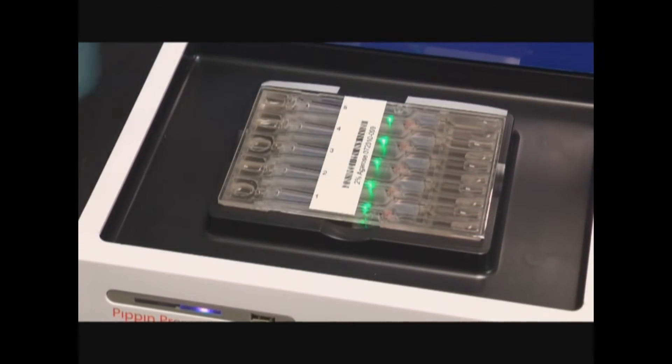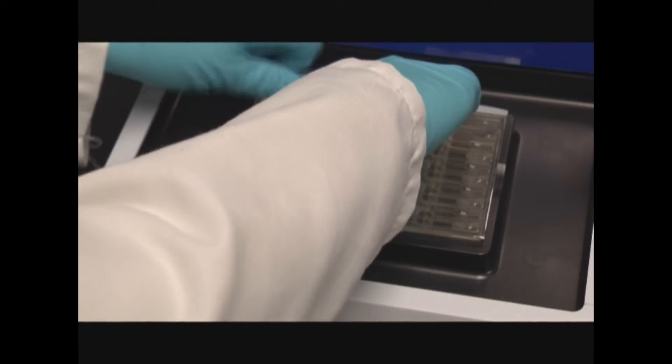Place the cassette onto the sample tray. In its correct orientation, the sample loading wells should be on the left.